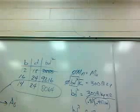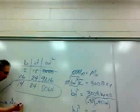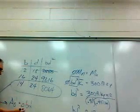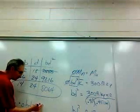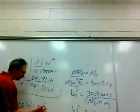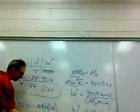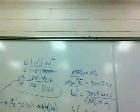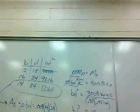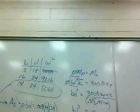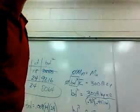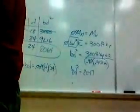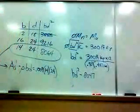My area of steel As would be rho times B times D.